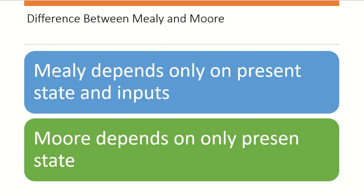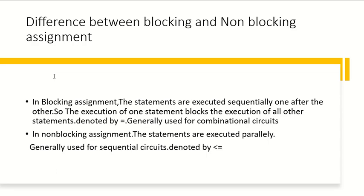The next question was: what is the difference between Mealy and Moore machines? My answer was that Mealy depends on the present state and inputs, while Moore depends only on the present state. I am sharing only the answers I gave — you can search online for more detailed answers.